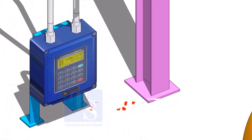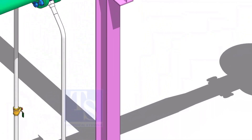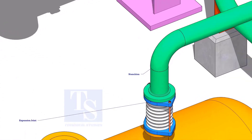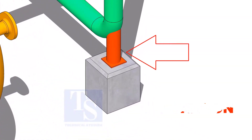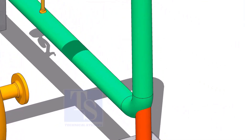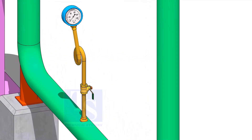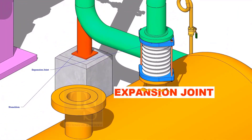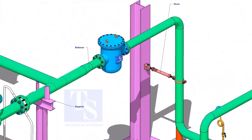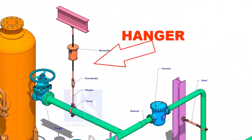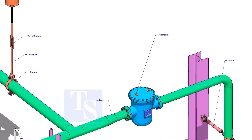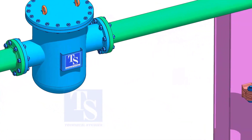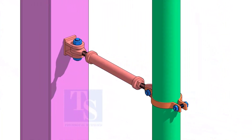Reducer, Flow meter, Stanchion, Pressure Gauge, Expansion joint, Hanger, Strainer, Strut.